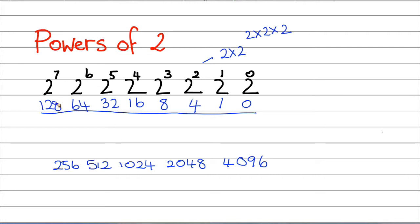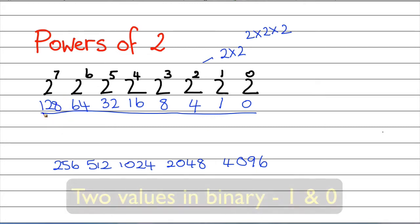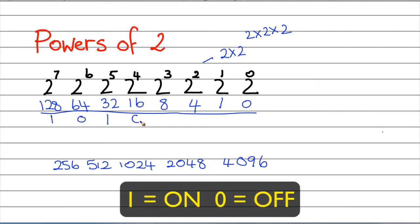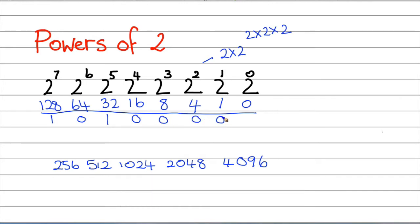So if I put a binary number into this byte, anything with a 1 in it is on. You simply take the values — there's a 32 and a 128 — and add them together. So this binary number has a decimal value of 160.